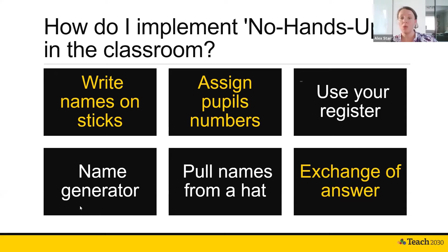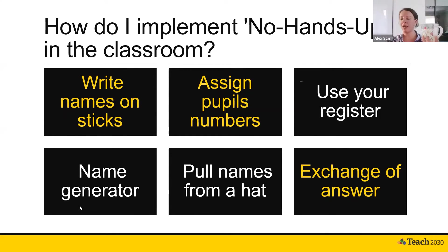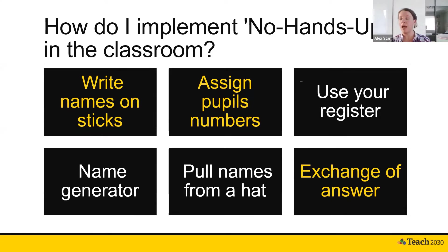For the name generator, if you've got technology in the classroom, you can put a separate name on every single slide of a PowerPoint and set it to cycle through — then just hit stop. Or you might have a hat: put all the students' names on slips of paper inside the hat, ask the question, and pick out a name. Whoever's name comes out has to answer. You can also let students do it — after Bobby answers, you say, 'Bobby, pick the next student to answer.'